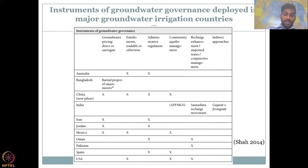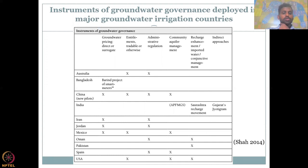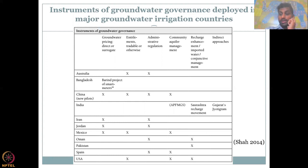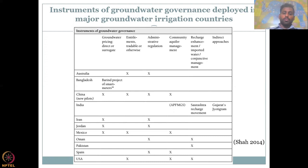In China, groundwater pricing is present — consumers have to pay per unit of groundwater they use — guided by administrative regulations and entitlements, and a lot of community management is happening. Iran and Jordan work similarly: they have meters for groundwater use and price it by volume, governed by administrative regulations. Mexico is governed by entitlements — only some people can use groundwater or you have to get permission — and that is being metered with some community management. Pakistan and Spain follow administrative regulations and work on collective recharge methods.